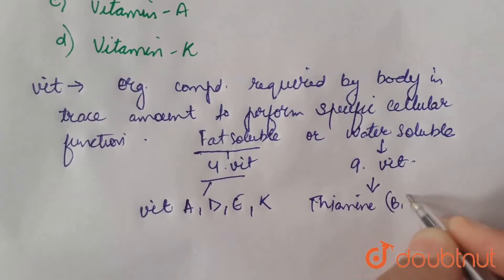Water soluble vitamins include thiamine or vitamin B1, riboflavin or vitamin B2, niacin, biotin, pantothenic acid, folic acid...